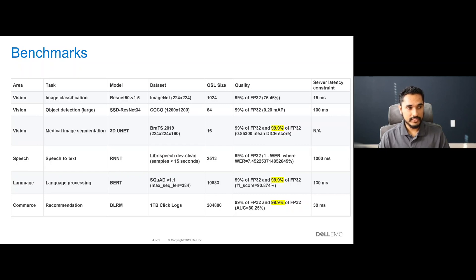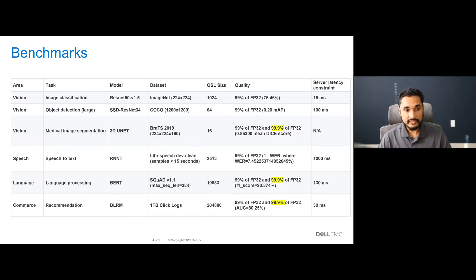Some benchmarks, such as ResNet-50, have a 99% accuracy expectation, whereas other benchmarks expect 99.9% of the actual value. In other words, some benchmarks have higher tolerance, whereas others — such as 3D U-Net, BERT, or DLRM — have lower tolerance relative to the 99% benchmarks. Different benchmarks also have different latency constraints.